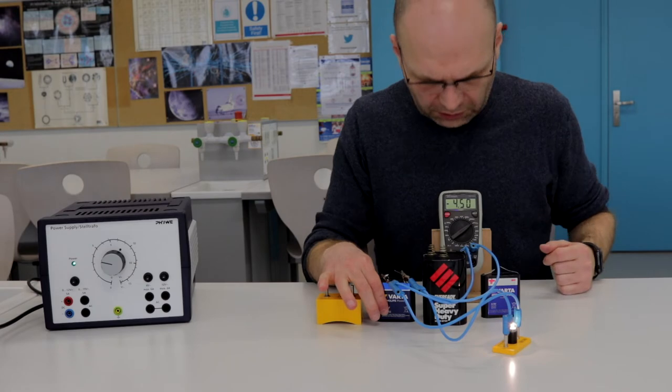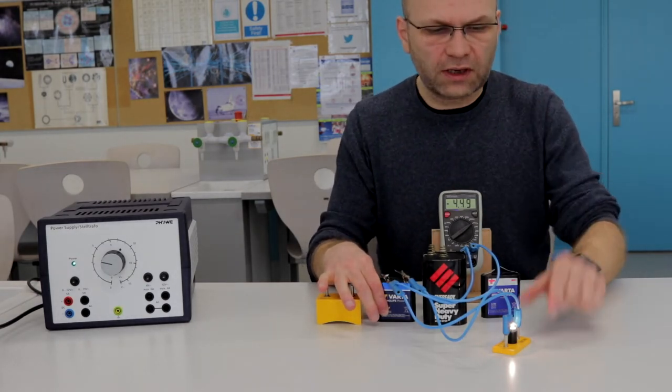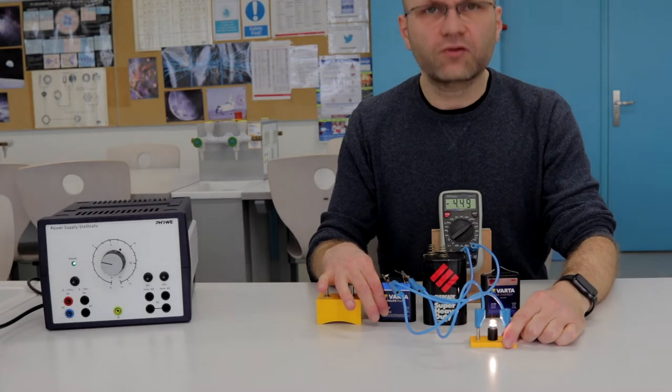In this case, the reading of the voltmeter is 4.50, slightly less than the original reading, and the light bulb is rather bright.